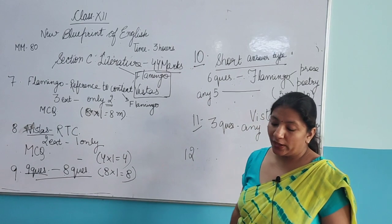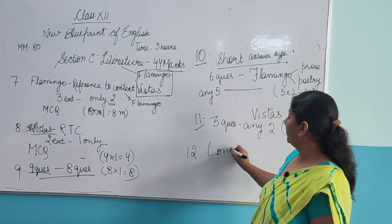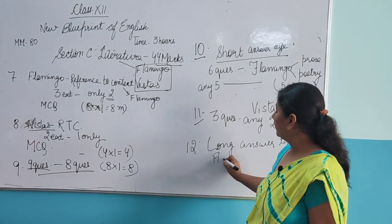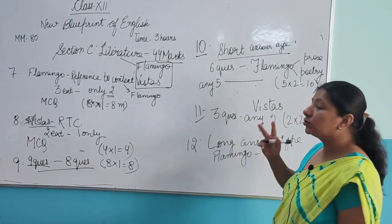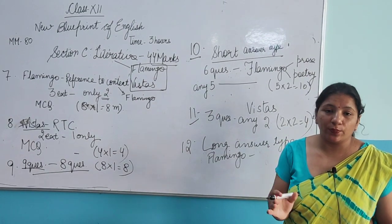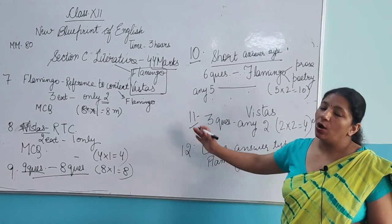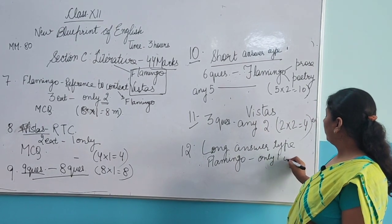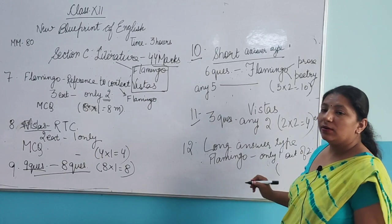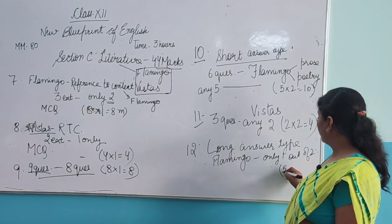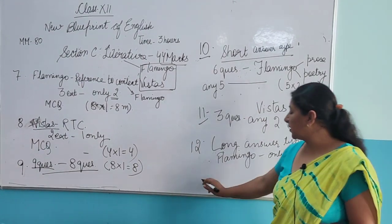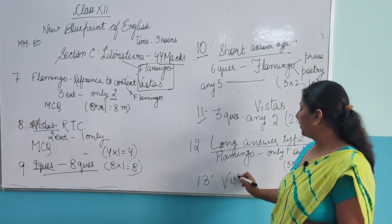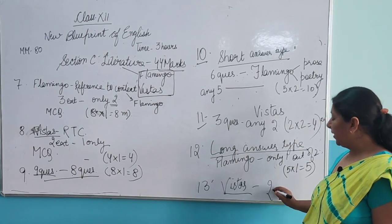The twelfth question is long answer type from the main book, Flamingo. Two questions will be given — it can be from either prose or poetry. Out of two, only one is to be done. Similarly, the thirteenth question is long answer type from Vistas — since Vistas has no poetry, it is only prose. Two questions will be given and one is to be done.